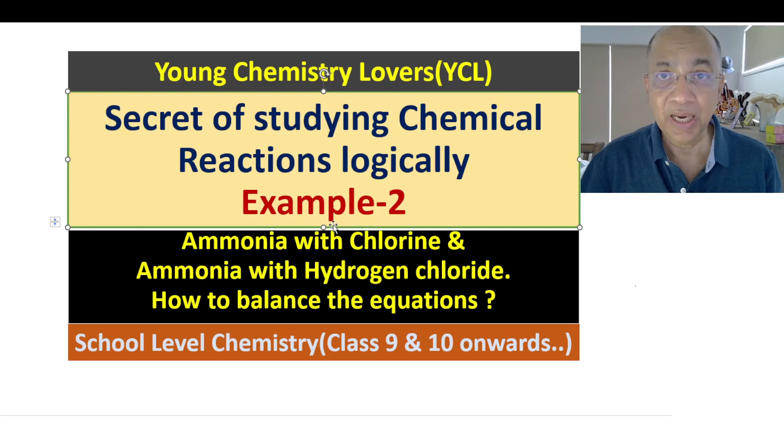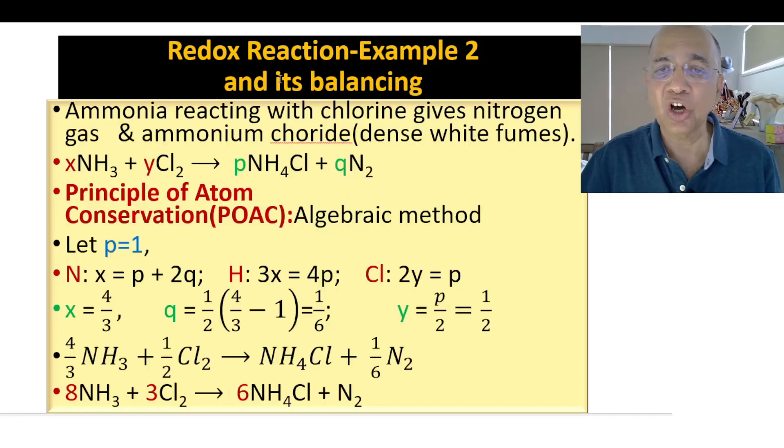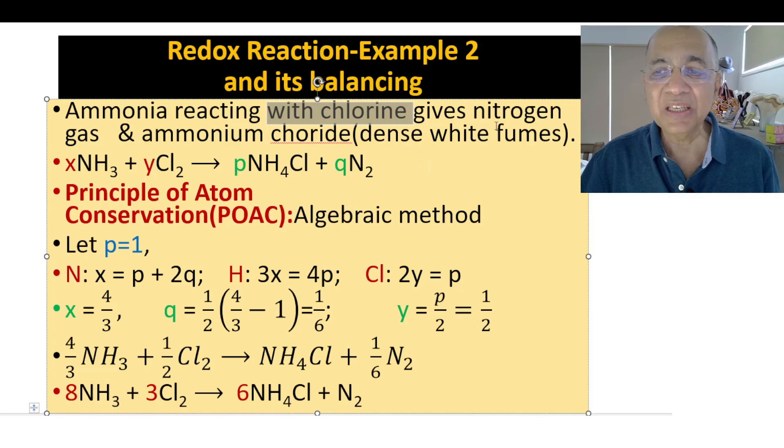And of course with this, to balance some complicated equations. Now let's take a redox reaction in which ammonia reacts with chlorine giving nitrogen gas and ammonium chloride. Ammonium chloride will appear as dense white fumes because it is a solid but volatile, so it will come as very dense white fumes.